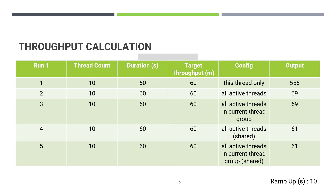Run four and run five are very similar to run two and run three, but the output is more accurate. The target throughput is 60 in run four and run five, but the output is 61 because the shared algorithm always tries to keep up to the target throughput and achieve it as closely as possible. That is why accuracy is greater with the shared algorithm and slightly less with the non-shared algorithm. The accuracy of target versus output is highest with 'This Thread Only'.